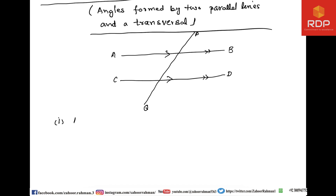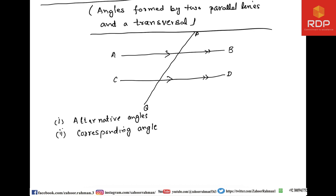The first type is called alternate angles, the second is called corresponding angles, and the third is interior angles. We have to learn these three types of angles because all the questions in the subsequent exercise are based on these concepts.